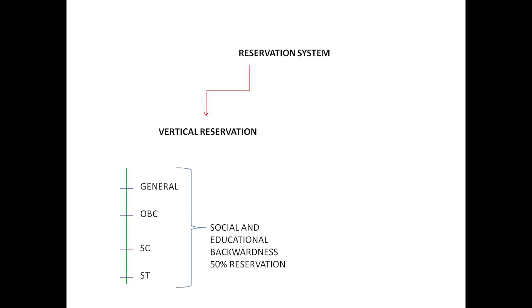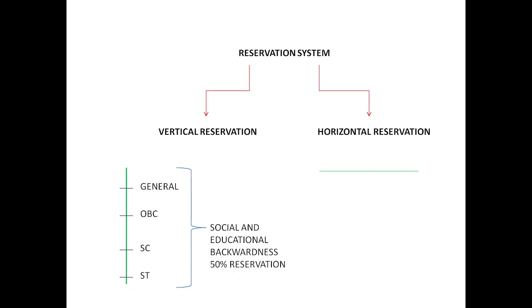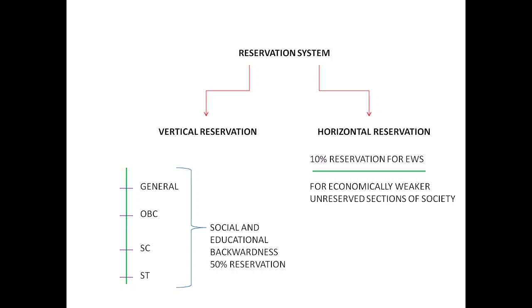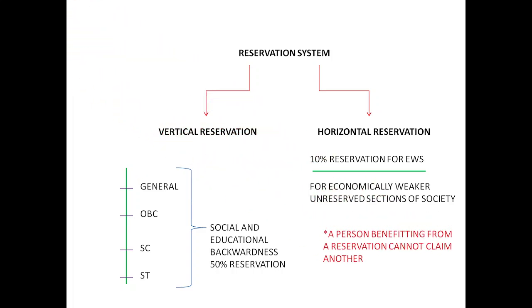The criteria for EWS can be decided by the respective state governments. After the 103rd Amendment Act, a new type of reservation came into existence — the Economically Weaker Section reservation — known as horizontal reservation. This horizontal reservation gives 10% reservation for the economically weaker sections of the unreserved sections of society. Importantly, a person who is already benefiting from either vertical or horizontal reservation cannot claim another reservation.